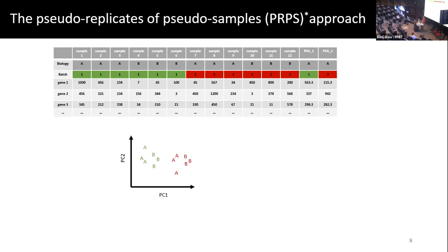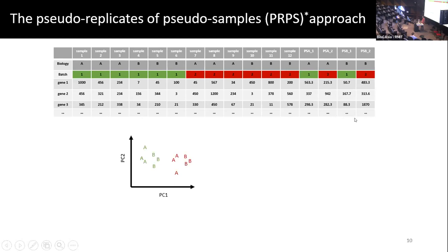By averaging, we try to not capture biology in our pseudo samples. We do the same for B as well: the B samples in batch one — we average them, get one pseudo sample; go to batch two, average them, get another pseudo sample. These two become another pseudo replicate pair. And at the end, we hope to get the batch removed and get the biology right. That's the PRPS approach for batches.